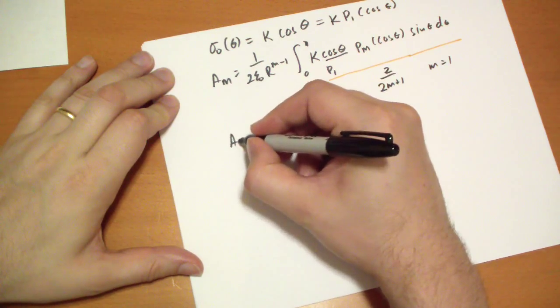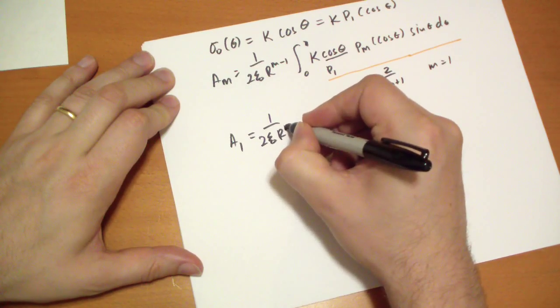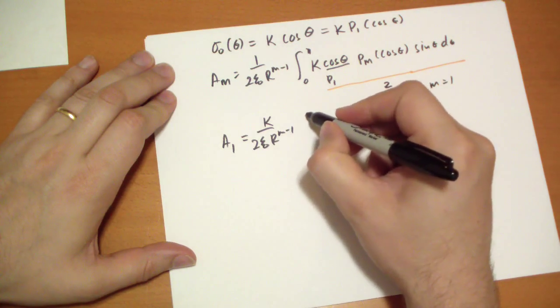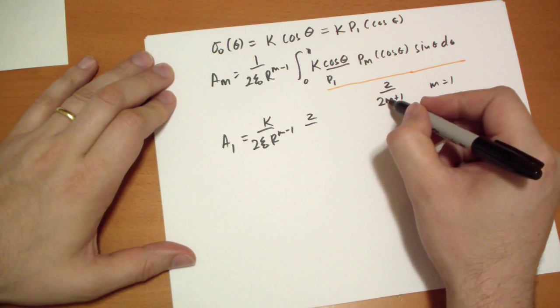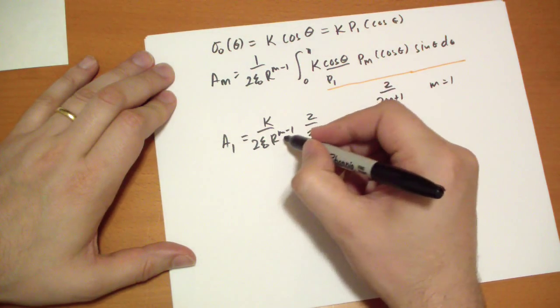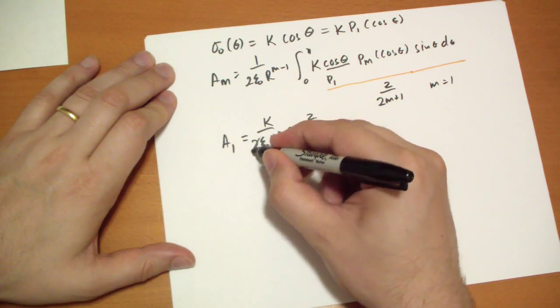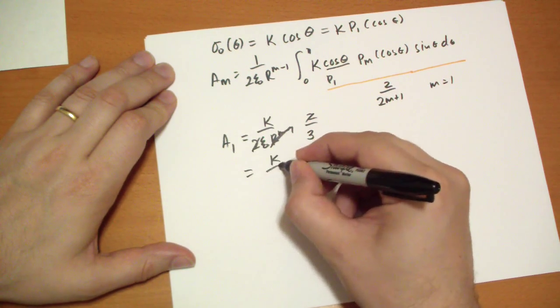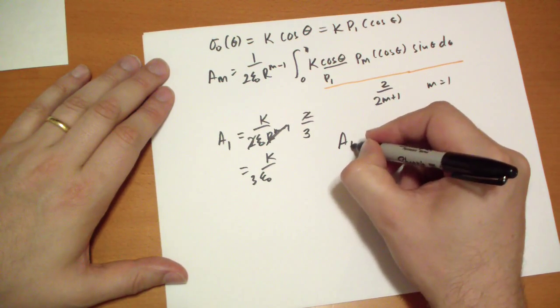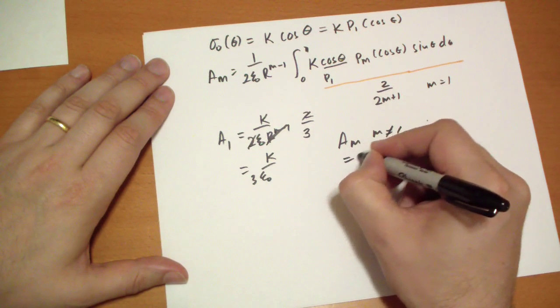So our a_m becomes a_1 equals 1 over 2 epsilon-naught r to the m minus 1, k, on the top, times 2 over 2m plus 1. 2m plus 1, that's 3. And I just recognized that this is 1 minus 1, this is 0, so this term is actually nothing. And these two cancel, so we get k over 3 epsilon-naught. That's our a_1. And a_m, where m is not equal to 1, is equal to 0.